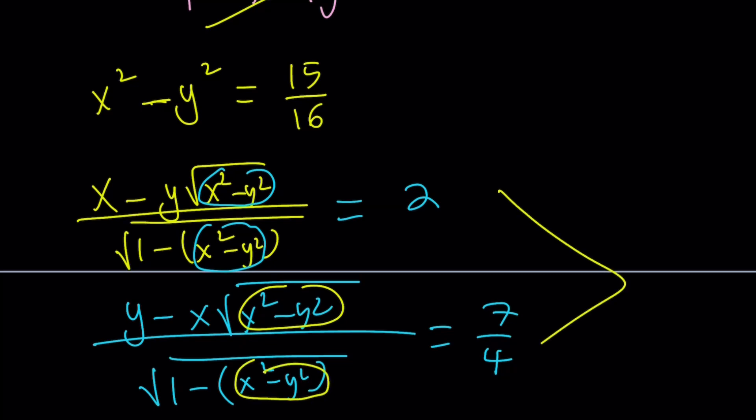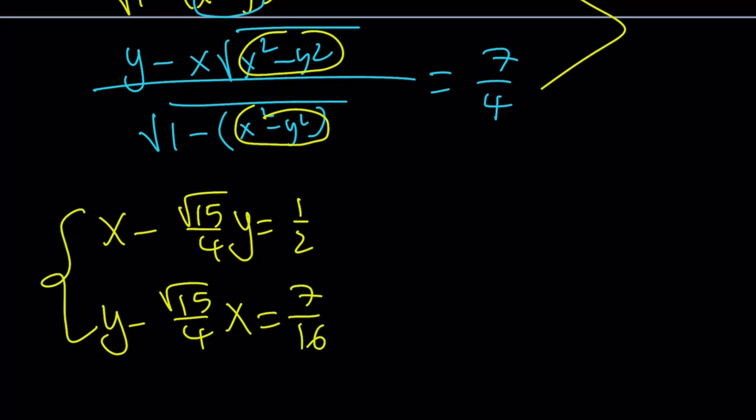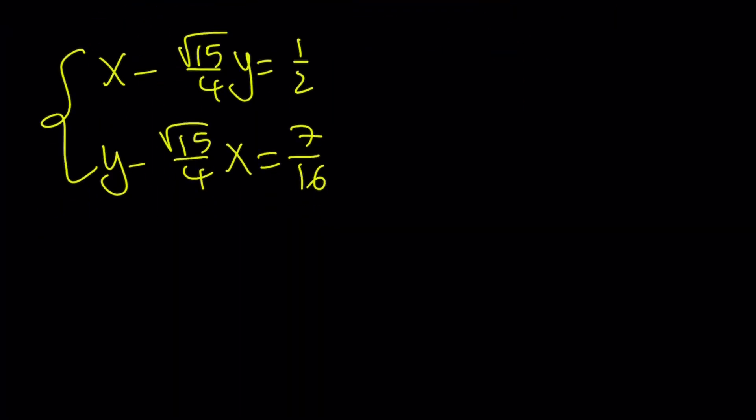So if you do those replacements, here's what you get from there. I'm just going to keep it real short. We get x minus the square root of 15 over 4y equals 1 half. And y minus square root of 15 over 4x equals 7 over 16. And now we've got a new system, but this time it's a linear system. Therefore, the solutions are fairly easy. I'm not going to bore you with the details. You can solve it easy peasy, lemon cheesy, piece of cake.